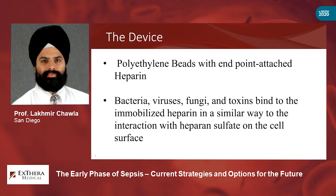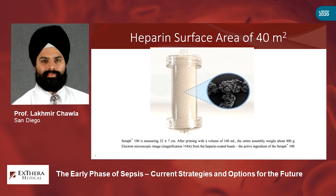Most of us think of heparin as what we dose patients with to achieve anticoagulation. But heparin has a large series of other properties. You can think of the device as a very large hemoperfusion system that exposes blood to a very large surface area of heparin — about 40 meters squared. A similar-sized dialysis filter would offer only about 2 meters squared of surface area. It's really an enormous amount of heparin surface being provided.